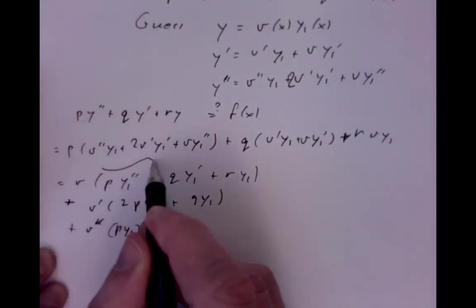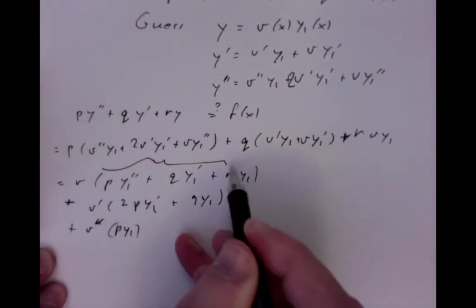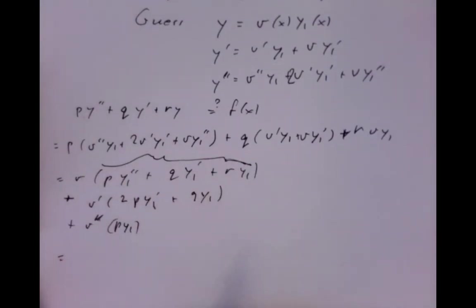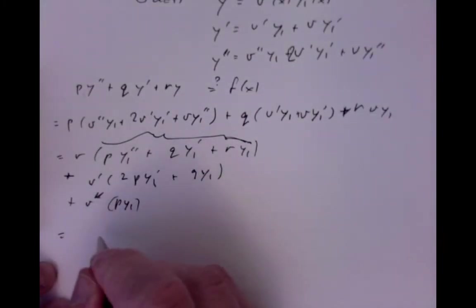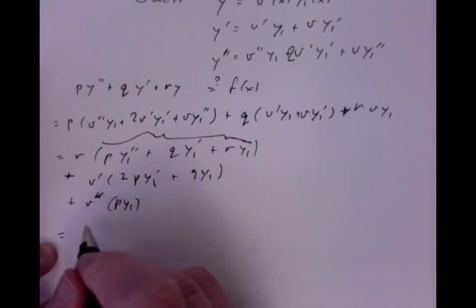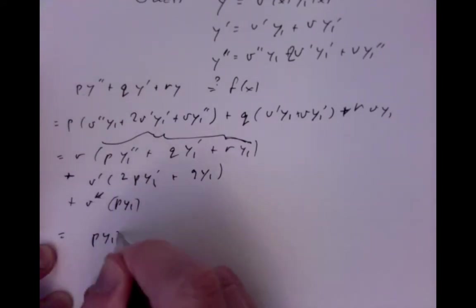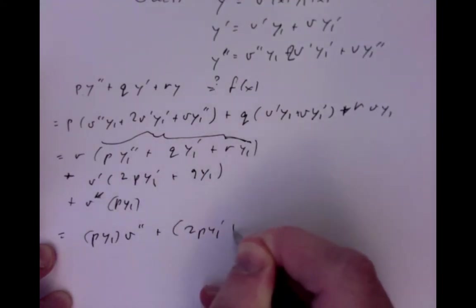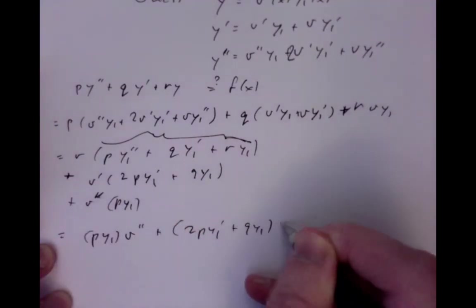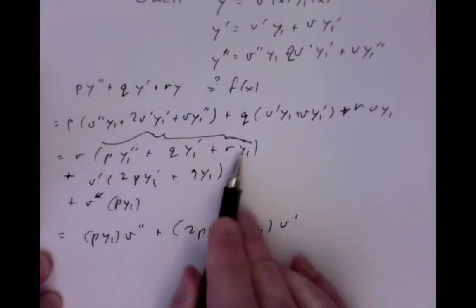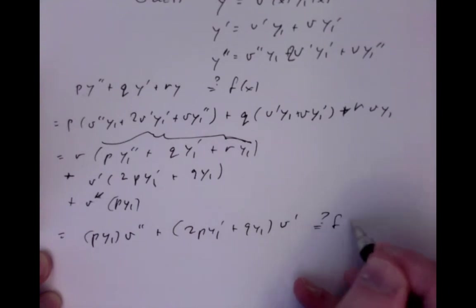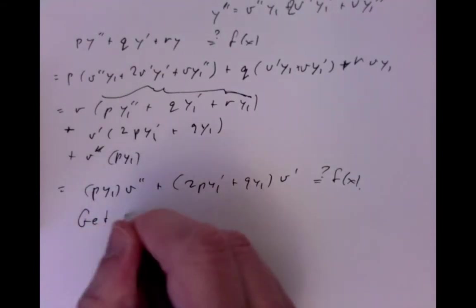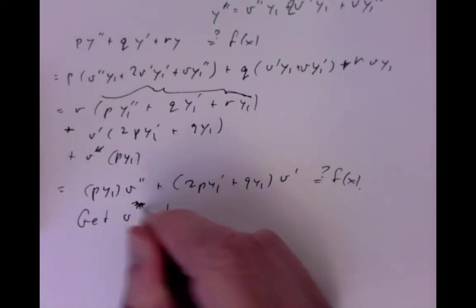But we assumed y1 solved exactly the homogeneous equation, so the v-term vanishes. Writing in order, we get p·y1·v'' + (2p·y1' + q·y1)·v' = f(x), with no v term.